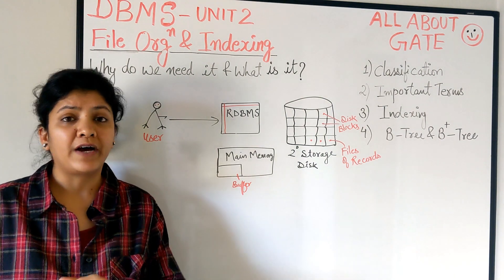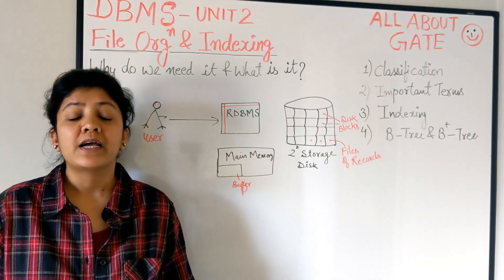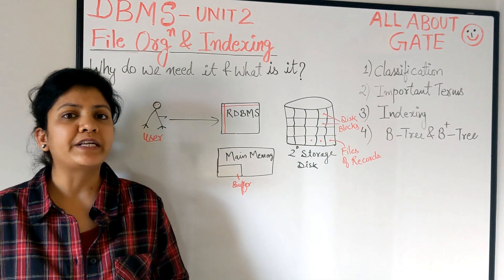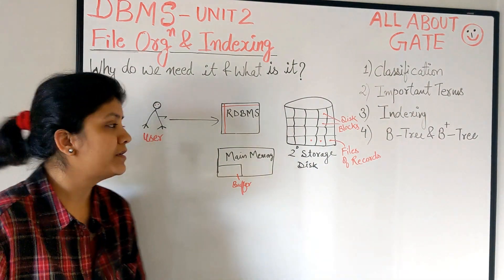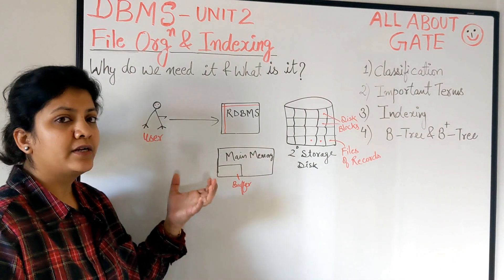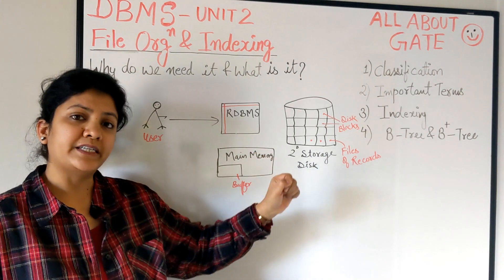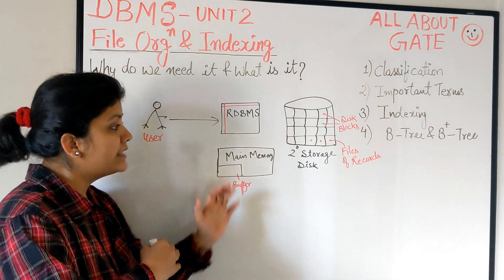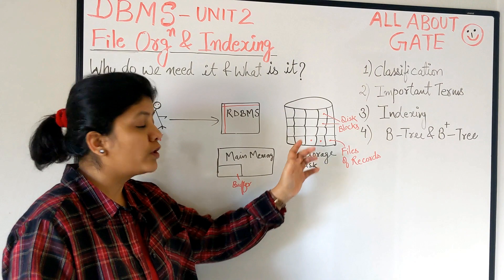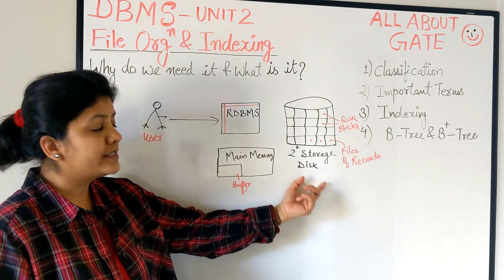Hello everyone, let's study file organization and indexing - what is it and why do we need it? Let's understand with one example. Here, being a user, I want to access some of my data from the database. We all understand that the database is actually stored on secondary storage. Here we are taking disk as a secondary storage.